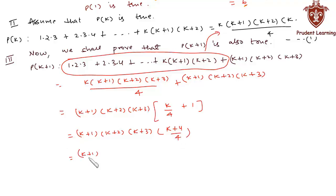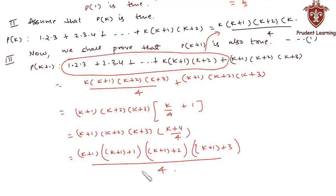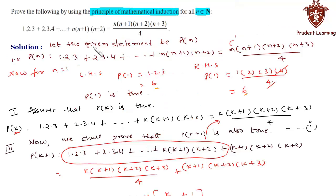This can be rewritten as (k+1)·(k+1+1)·(k+1+2)·(k+1+3) divided by 4, which is exactly the form of P(k+1). Thus P(k+1) is true whenever P(k) is true. Hence, by the principle of mathematical induction, the given statement P(n) is true for all natural numbers n.